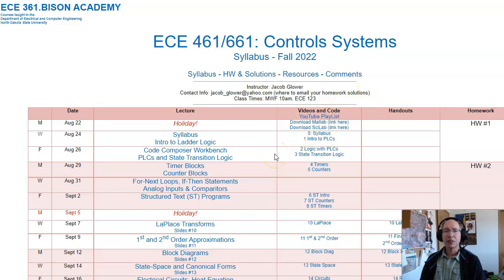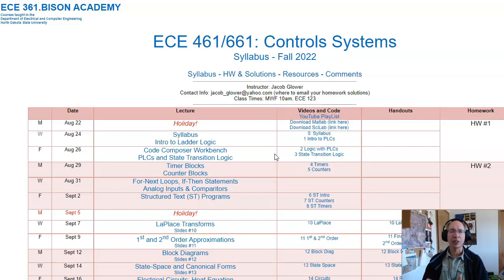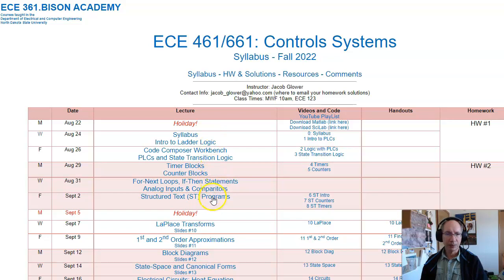The purpose of 461 is basically applied math. Control Systems actually has a couple different meanings. One of them is state transition logic, kind of what you did back in ECE 275. There's a thing called programmable logic controllers, or PLCs — think about a car wash. When you go into a car wash, you stop; a pump turns on for so many seconds, turns off, a motor turns on for so many seconds. It's a sequential machine — that's ladder logic. We'll be doing that for the first two weeks.